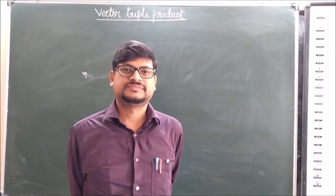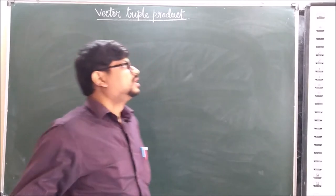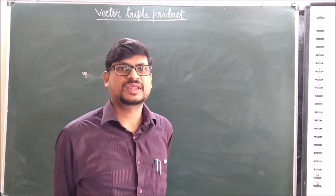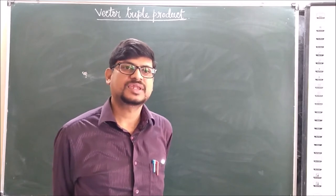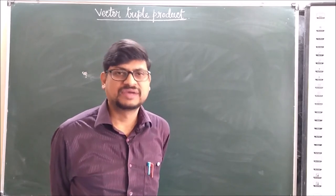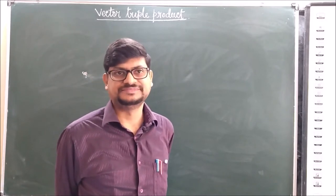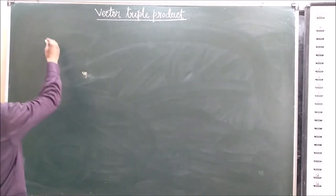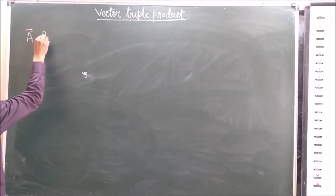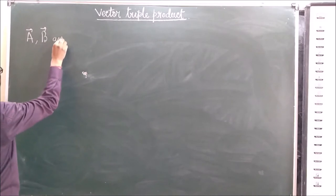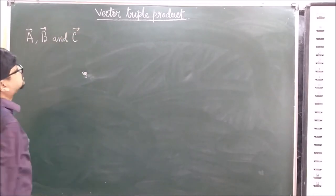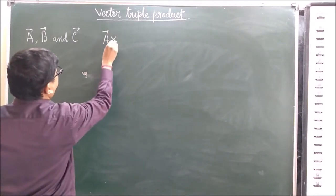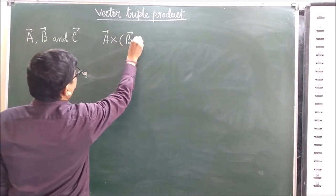Today we will talk about vector triple product. Last time we saw that if there are three vectors involved, we can get a scalar triple product which gives a scalar quantity, and a vector triple product which gives a vector quantity. Today we will see vector triple product. We have three vectors: Vector A, Vector B, and Vector C. Then the vector triple product will be A cross B cross C.